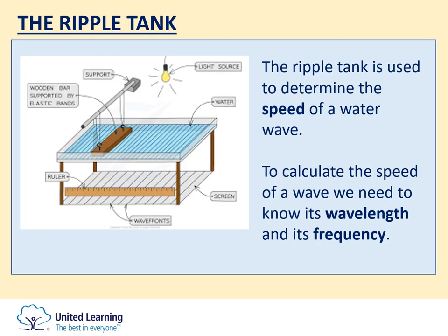Starting with the ripple tank practical — this is one of the required practicals you would have seen way back at the beginning of Year 11. We use this particular setup of equipment to measure the speed of a water wave. The equipment consists of a glass-bottomed tank attached to a vibrating bar with a small depth of water in it. The glass-bottomed tank projects a shadow down onto a screen underneath, where we often place white paper and a ruler for taking measurements. A light source is suspended above to illuminate the wavefronts as they travel along.